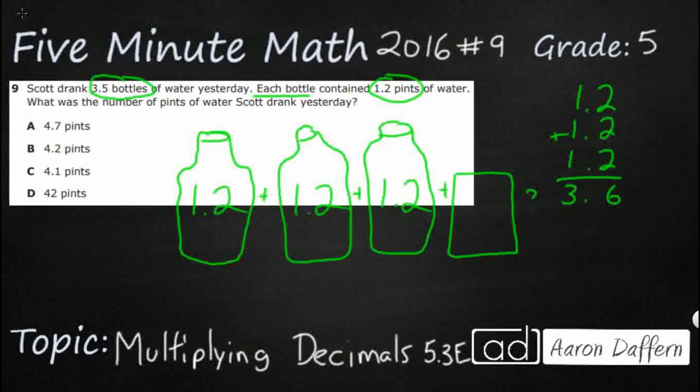But if we wanted to, we can also do some multiplication. So let's leave this, we'll come back to this right now. What does it mean when we multiply this 3.5 times the 1.2? Because that's really what we're being asked to do is multiply decimals.